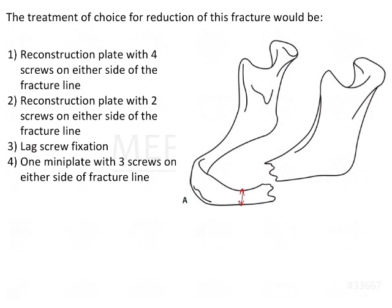Among the two reconstruction plate options, reconstruction plates are large plates requiring good stabilization. With only two screws on either side of the fracture line, the plate will not be well adapted or well fixed to the bone. Using four screws on either side provides extra stability for both the bone and the plate, and also helps maintain fixation for a longer duration of time.